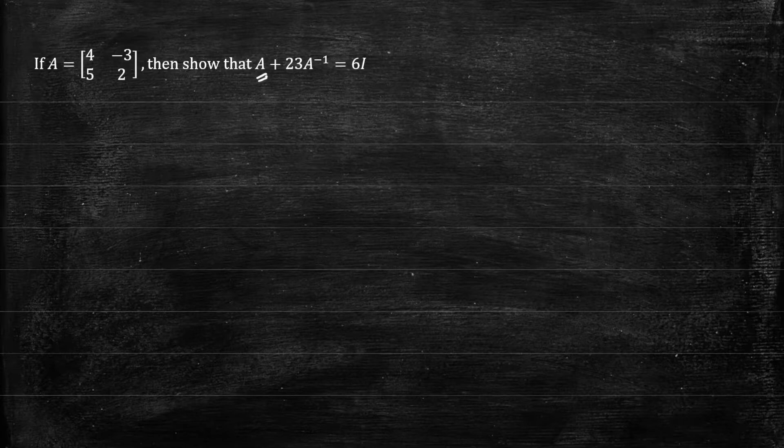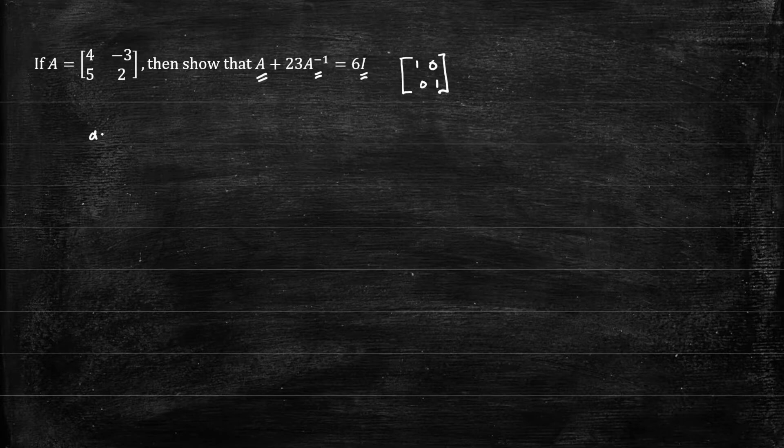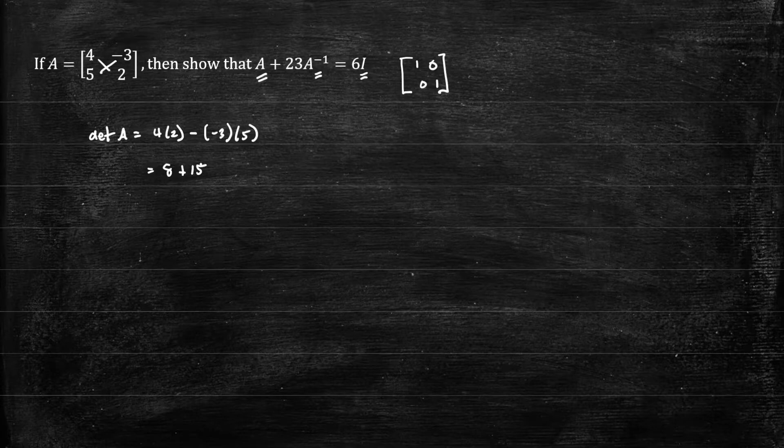So we have A already given. I is the identity matrix, which is 1, 0, 0, 1. We need to calculate the inverse of matrix A. Let's calculate the determinant of matrix A. So we have 4 times 2 minus the other diagonal, negative 3 times 5. So we have 8 plus 15, which is 23. That's the determinant of matrix A.